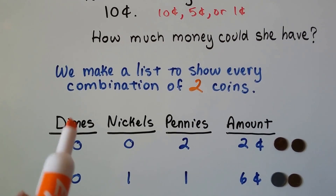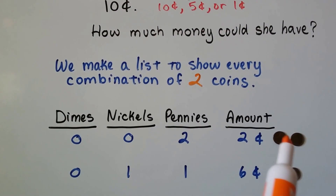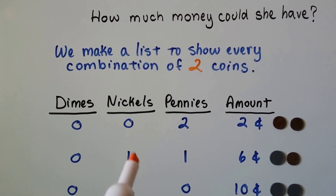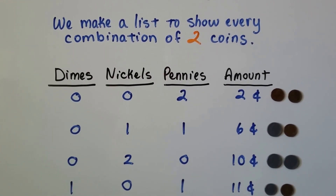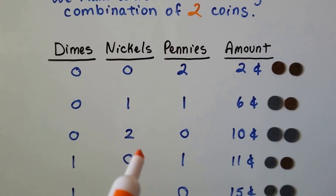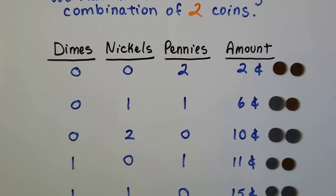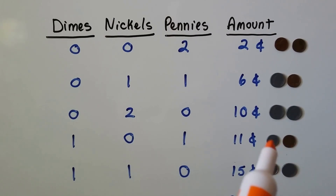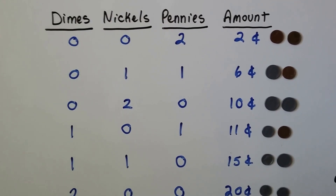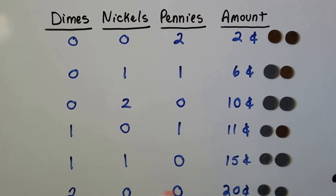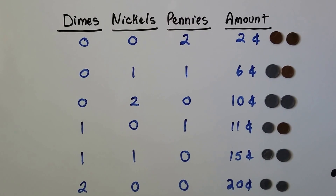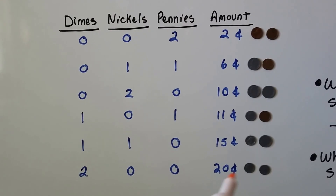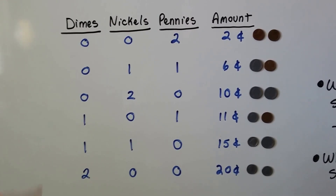The coins are either dimes, nickels, or pennies. Two pennies — that's two coins — would be two cents. One penny and one nickel would be six cents. Two nickels would be ten cents. One dime and one penny would be eleven cents. One dime and one nickel would be fifteen cents. And two dimes with no nickels and no pennies — that's two coins — would be twenty cents.